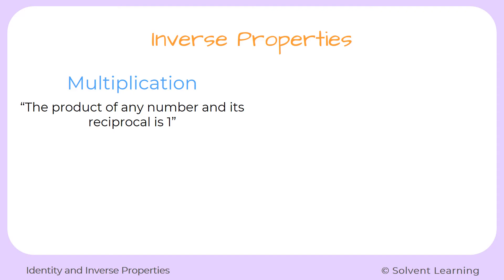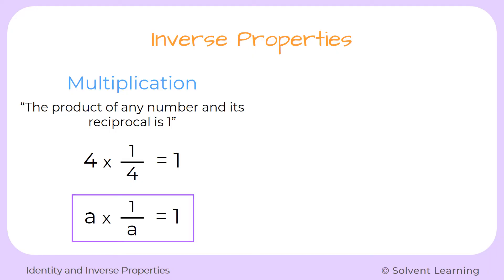Next we have the inverse property for multiplication, which says that the product of any number and its reciprocal is 1. To understand what a reciprocal is, let's look at this example. We start with the number 4 and multiply it by its reciprocal, which is the fraction 1 over 4. The fraction 1 fourth just took the number 4 and put it at the bottom as the denominator, then put a 1 as the numerator. So 4 times 1 over 4 equals 1. As a rule: a times 1 over a will equal 1 for any real number.